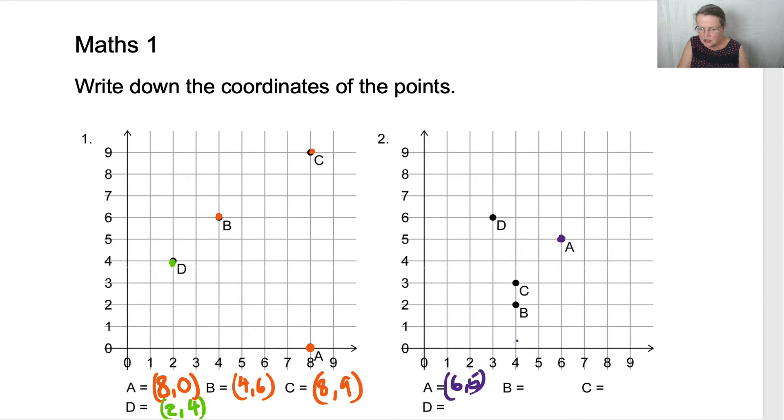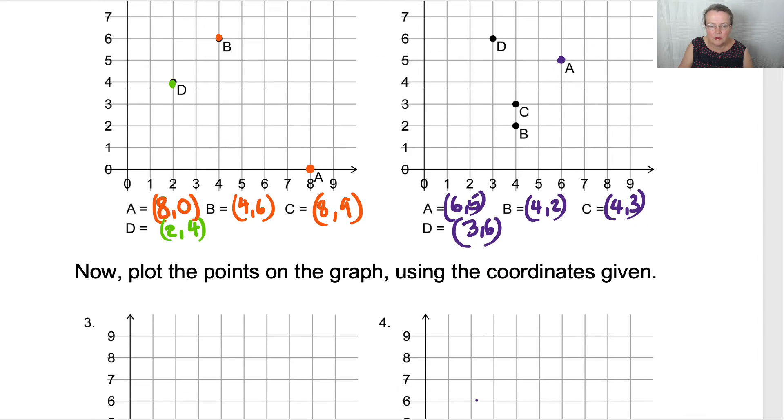B, go across four and up three. Four, three. And then D is across three and up six. Hang on. Three, six. Now let's scroll down and we'll do the next bit.